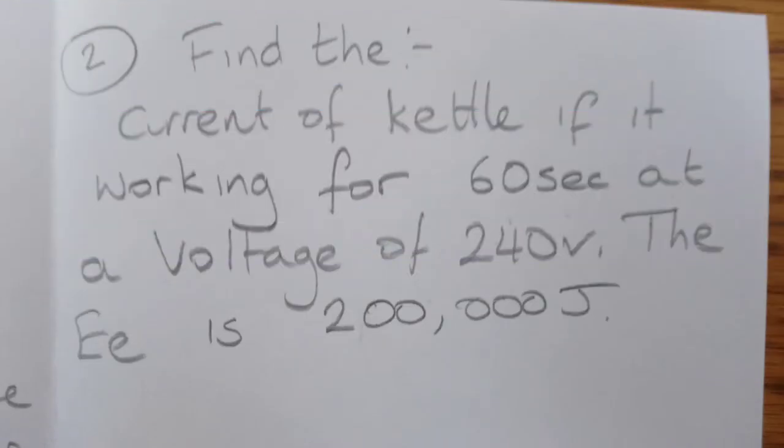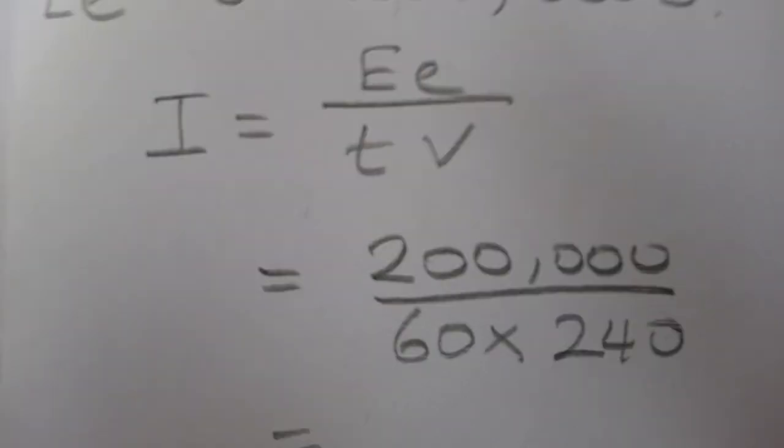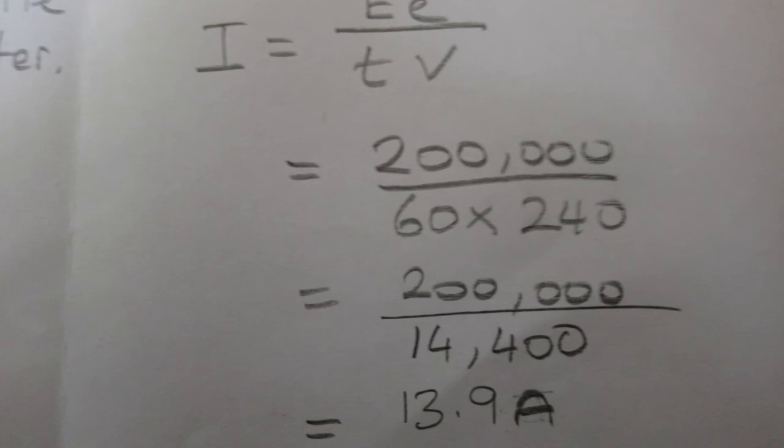Next we're going to find the current. This time the kettle is only on for 60 seconds and it's got an electrical energy of 200,000 joules. Changing the formula over so that current is equal to electrical energy divided by t times V. Working out the bottom part of this formula: 60 times 240 first, so you get 200,000 over that to give you 13.9 amps.